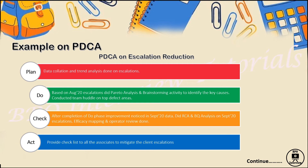In the Do phase, I will also perform a brainstorming activity to identify the key reasons we are getting errors and escalations. I can conduct huddles and dip checks to identify the top parameters being impacted. Pareto analysis will show what 80% of the problems are occurring because of which 20% of defects — we gather all this study in the Do phase.